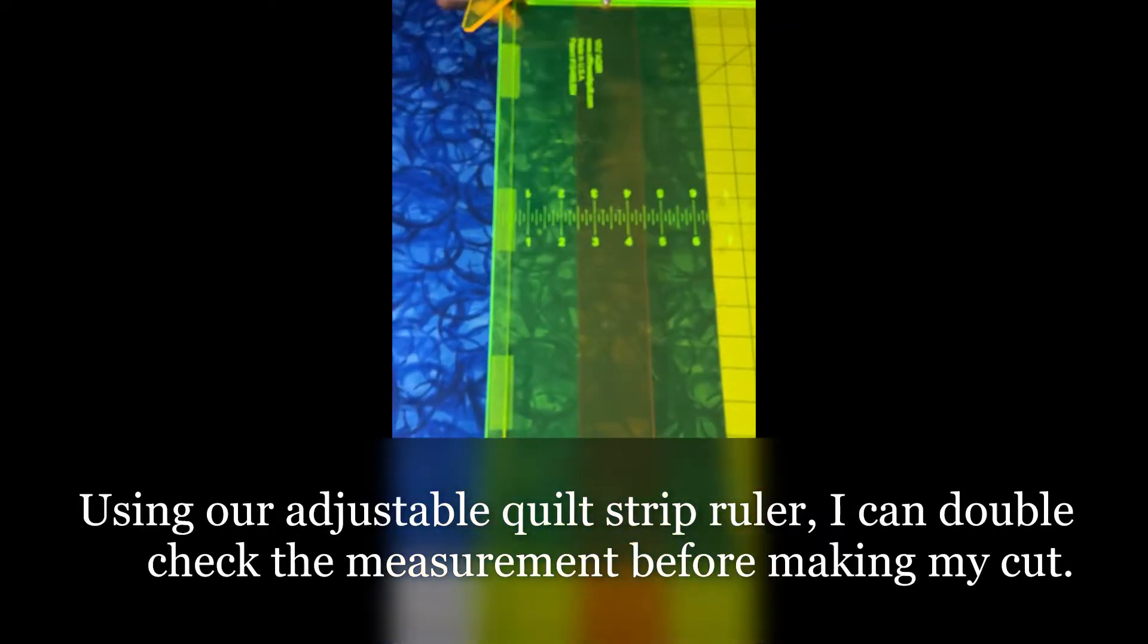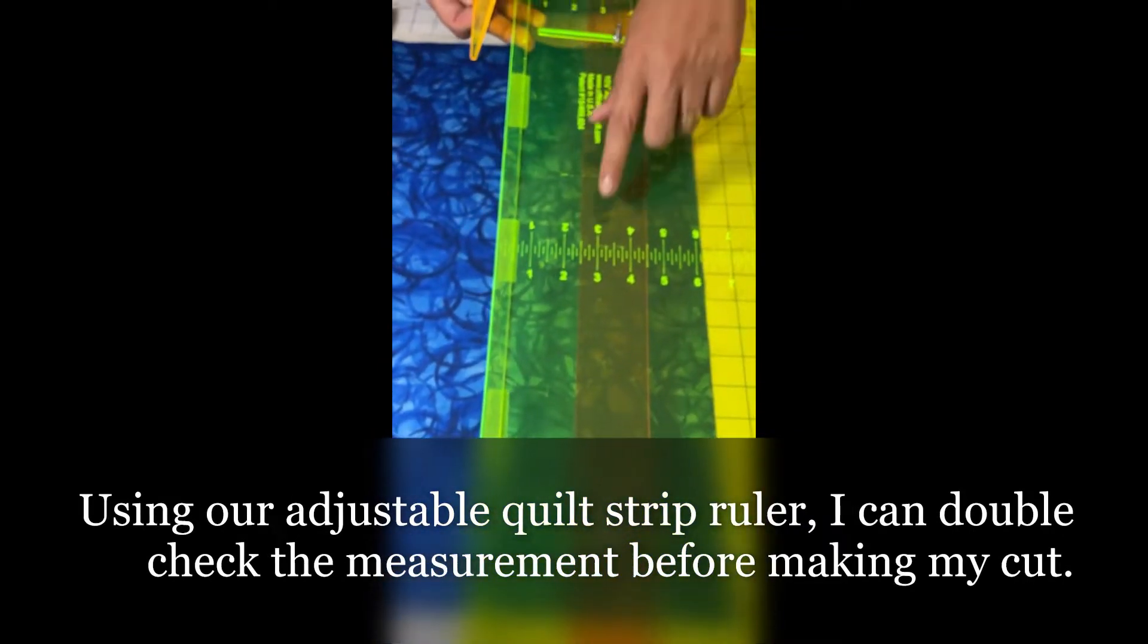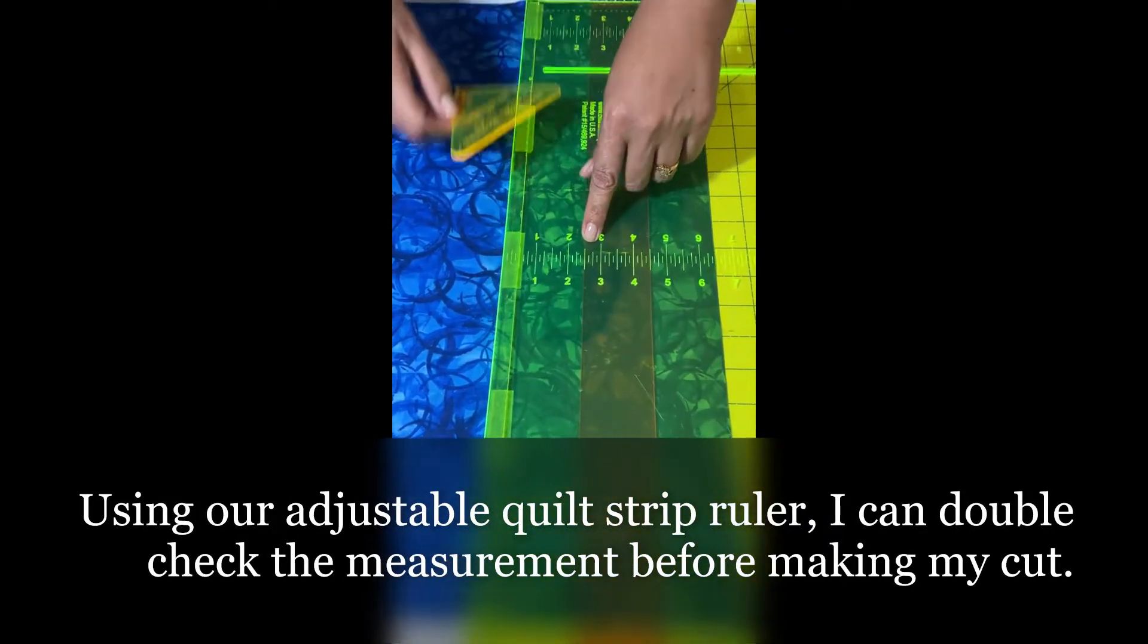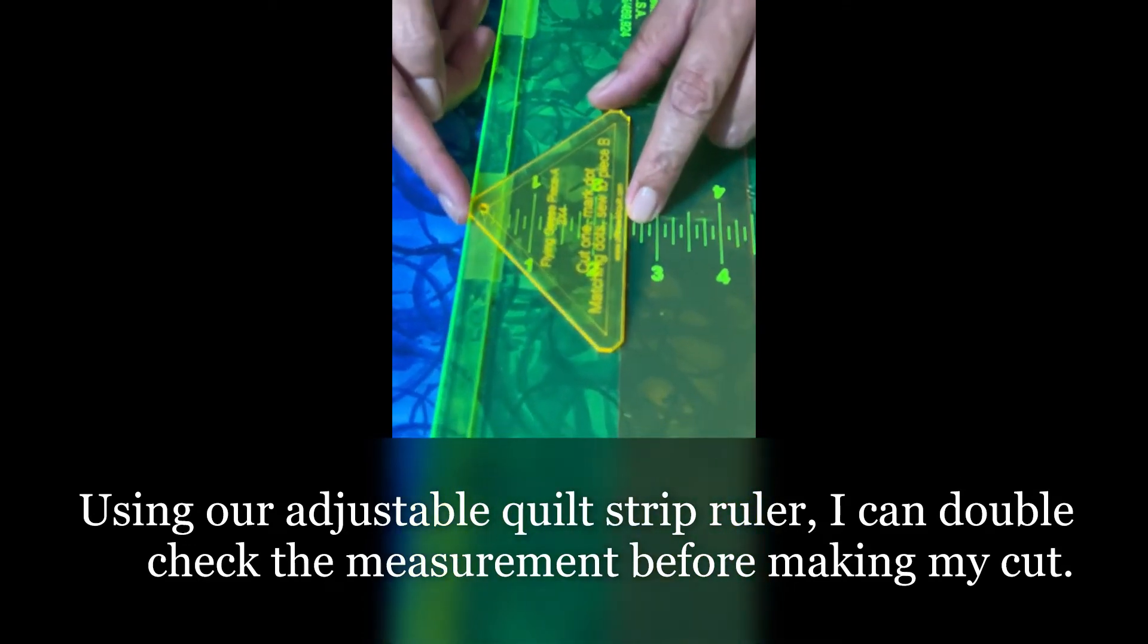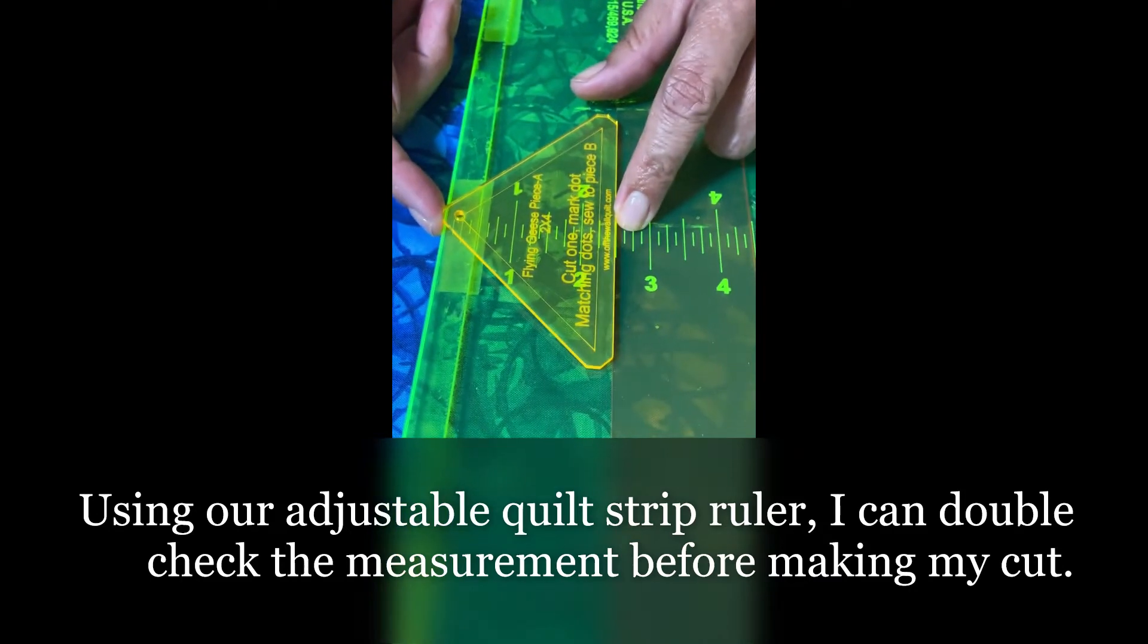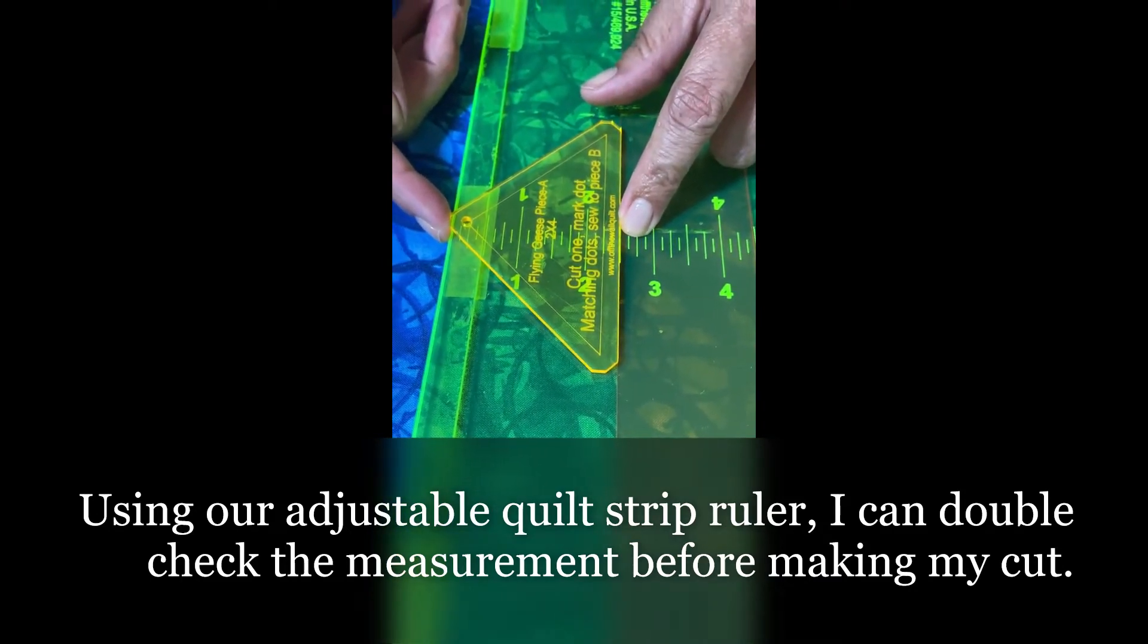I've got my adjustable quilt strip ruler here set at 2 1⁄2 inches and I can double check the edge here matches up with my cutting edge over here. You can see how I'm going to eliminate most of the waste.